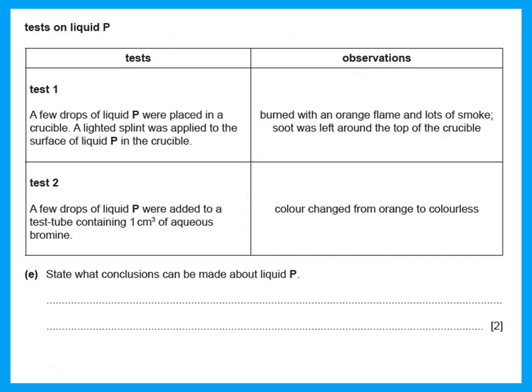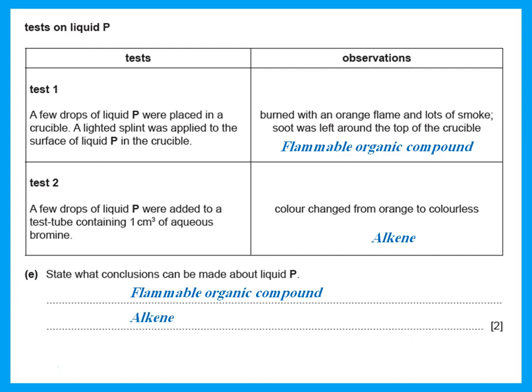The solution turns orange because bromine is produced. For liquid P: a lighted splint was applied and it burned with a flame and lots of smoke, indicating a flammable organic compound. A few drops of liquid P were then added to aqueous bromine, and the color changed from orange to colorless. Bromine water becoming colorless is the test for an alkene, so liquid P is a flammable organic alkene.